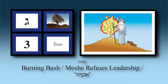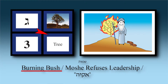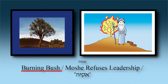Chapter three rhymes with 'tree.' In chapter three, the Sneh — the burning bush. The simon 'tree' goes really nicely: Sneh-tree, that's a very simple association. In chapter three — tree — HaKadosh Baruch Hu reveals Himself to Moshe Rabbeinu at the Sneh and speaks to him, asking him to go to Pharaoh and tell him to let Bnei Yisrael go.